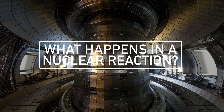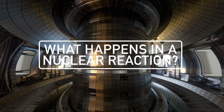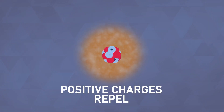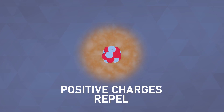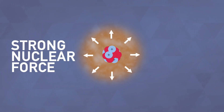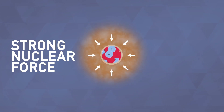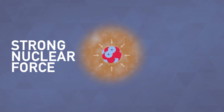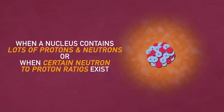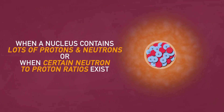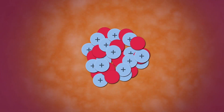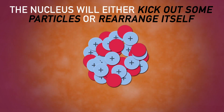So what happens in a nuclear reaction? Basically, something changes in the nucleus. Because the nucleus is made up of protons and neutrons, you might think that all of those positive charges crammed together and repelling one another would make the nucleus unstable. Luckily, there's a force known as the strong nuclear force that acts as the glue that holds the whole thing together. But when the nucleus of an atom contains lots of protons and neutrons, or when certain neutron-to-proton ratios exist, even the strong nuclear force can't hold it all together, and the whole thing can become unstable. When that happens, the atom's nucleus will either kick out some particles or rearrange itself.